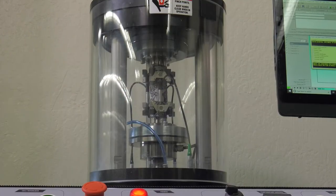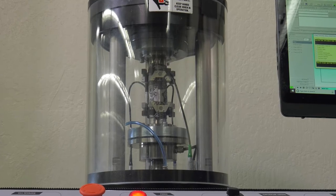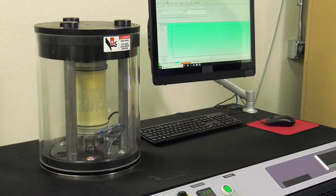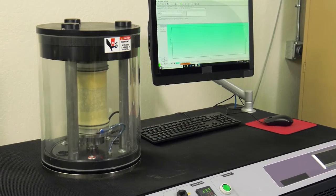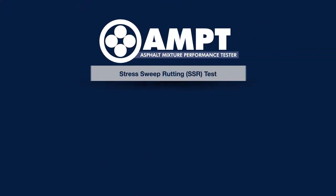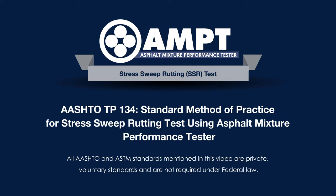This video is part four in a series of four videos on asphalt testing using the Asphalt Mixture Performance Tester, or AMPT. This video demonstrates the preparation and testing for stress sweep rutting, or SSR, based on AASHTO TP-134. All AASHTO standards mentioned in this video are private voluntary standards and are not required under federal law.